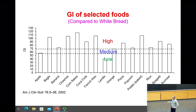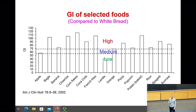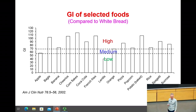Cheerios — this cereal that people eat all the time, especially for breakfast — produces a huge spike in blood glucose levels. Corn flakes are even worse; it's actually slightly less than Coca-Cola.